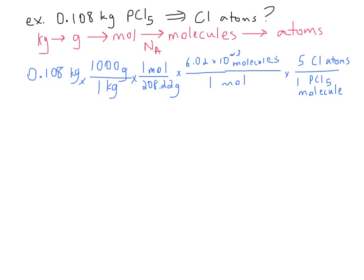Here is the solution. Start with 0.108 kilograms. Go from kilograms to grams: put kilograms on the bottom, grams on top — there are 1000 grams in one kilogram. Then convert grams to moles: put grams on the bottom, with 208.22 grams per mole as the molar mass of PCl5. That's the molar mass from adding one phosphorus plus five Cl's from the periodic table.